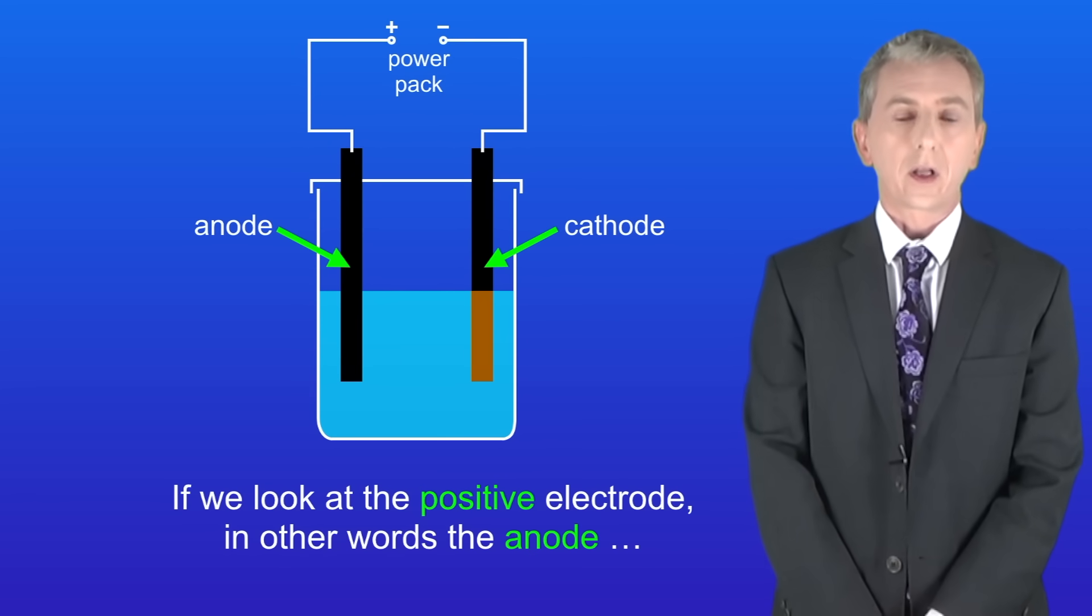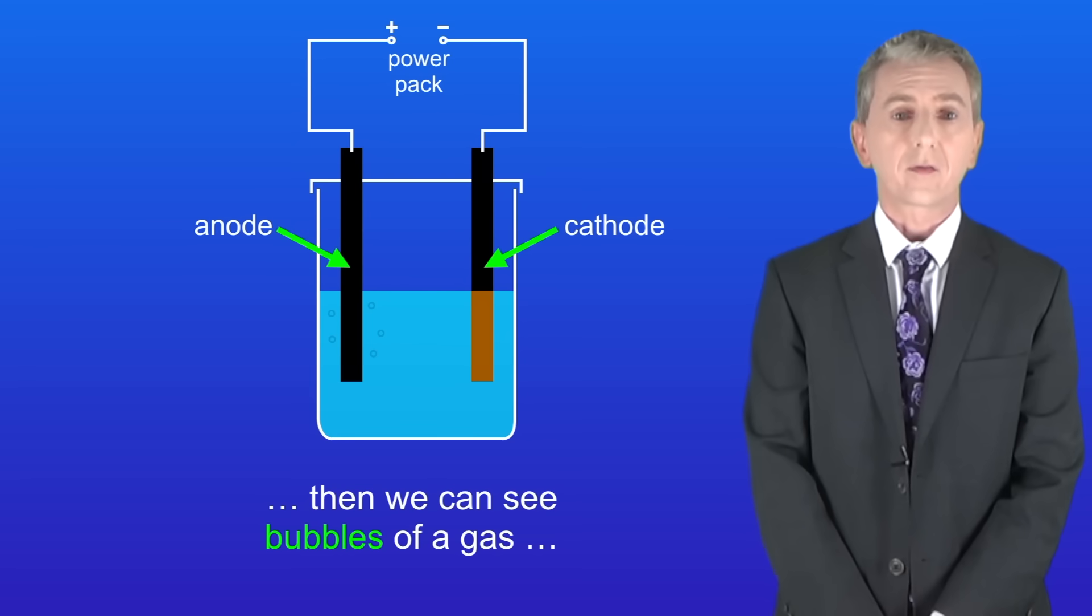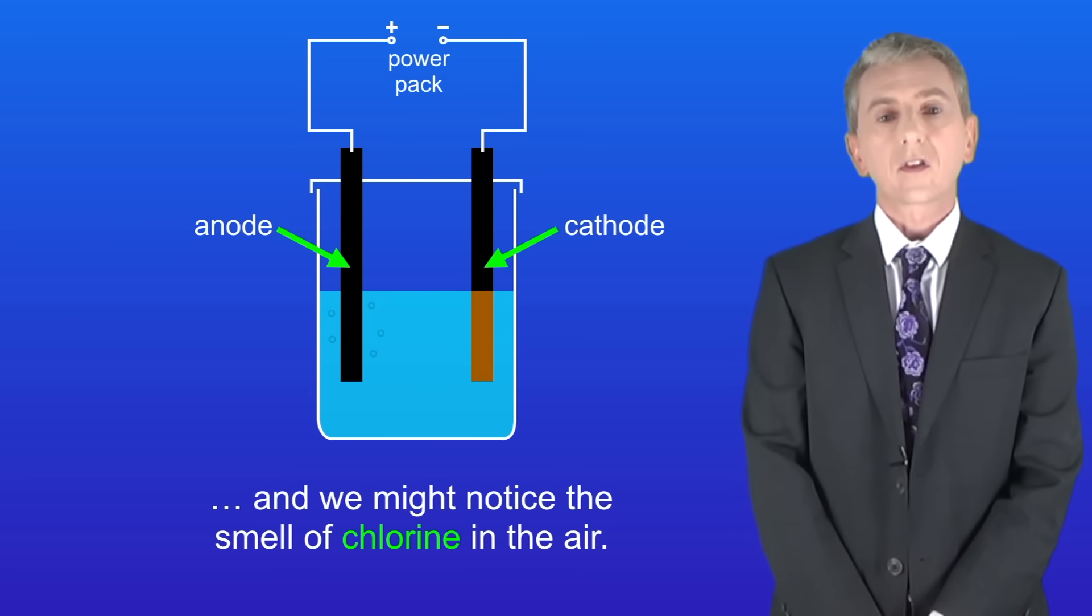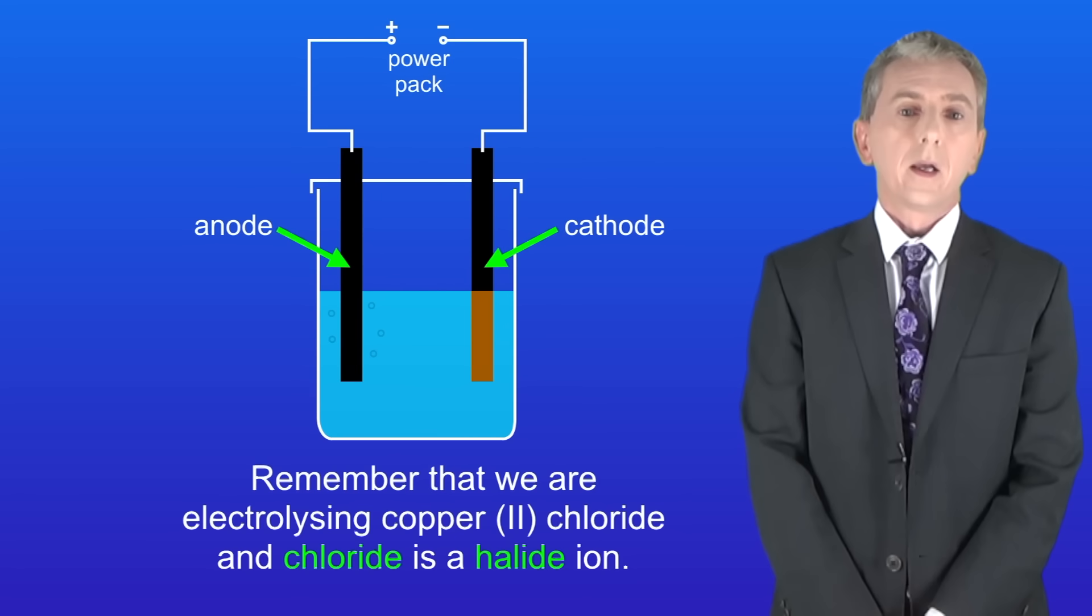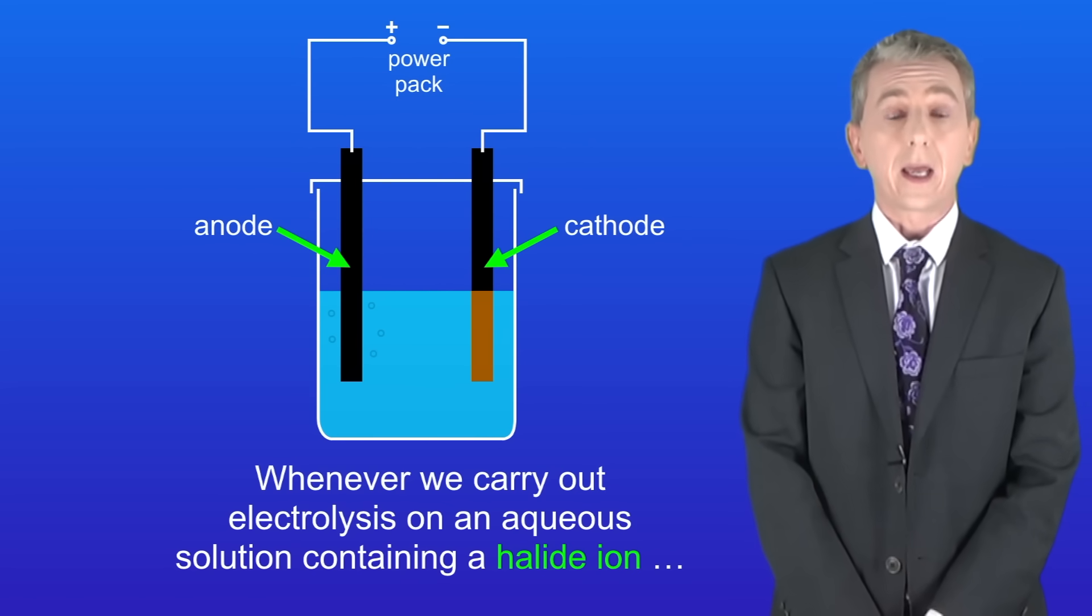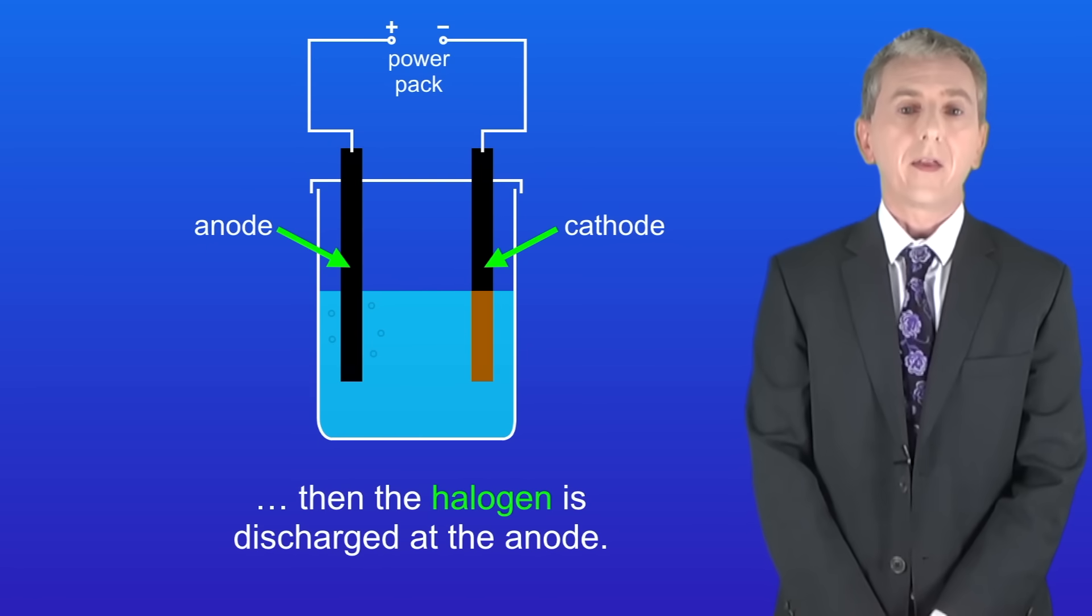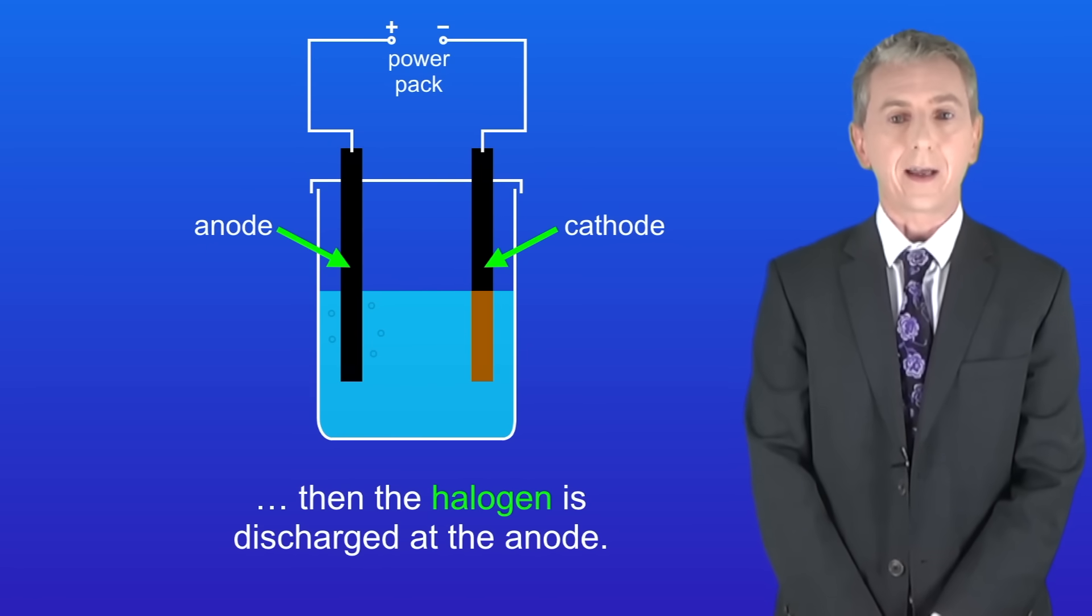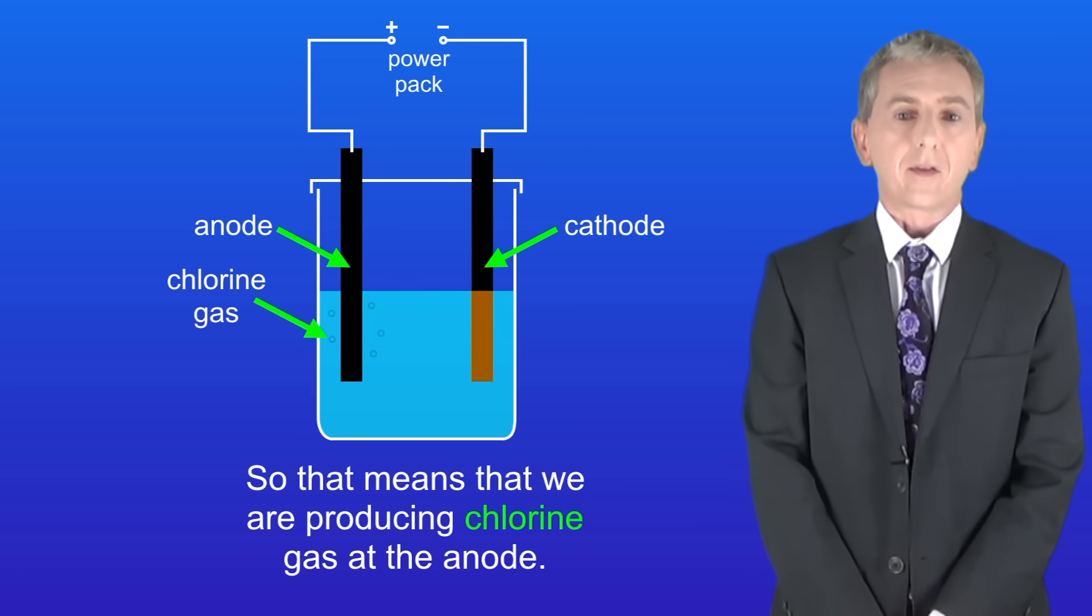If we look at the positive electrode, in other words the anode, then we can see bubbles of a gas and we might notice the smell of chlorine in the air. Remember that we're electrolyzing copper chloride and chloride is a halide ion. Whenever we carry out electrolysis on an aqueous solution containing a halide ion then the halogen is discharged at the anode. So that means that we're producing chlorine gas at the anode.